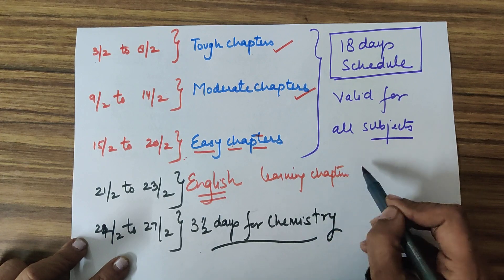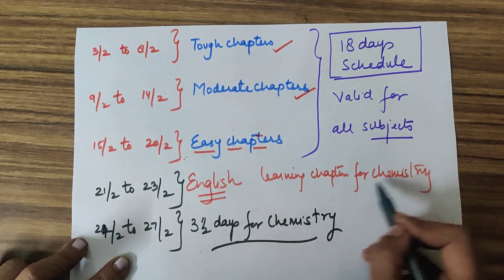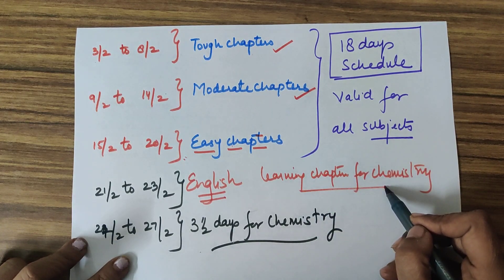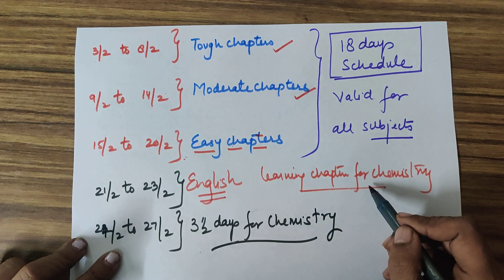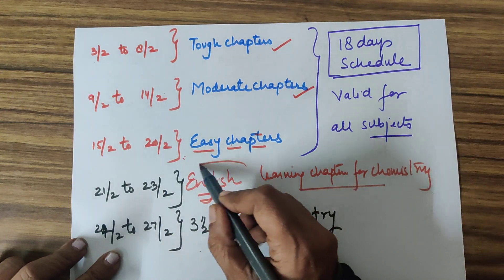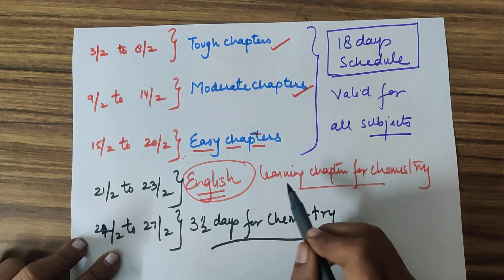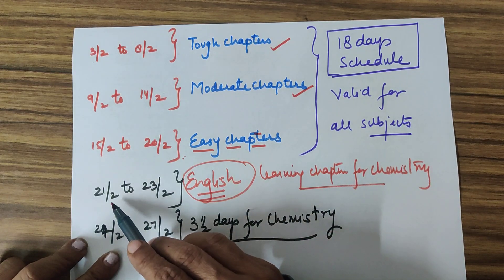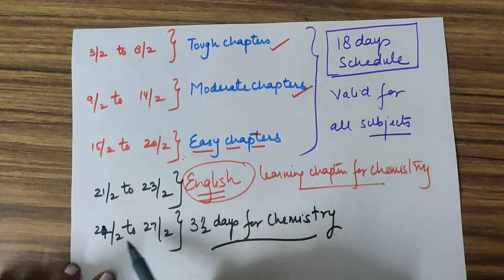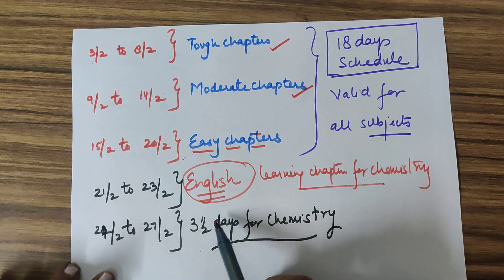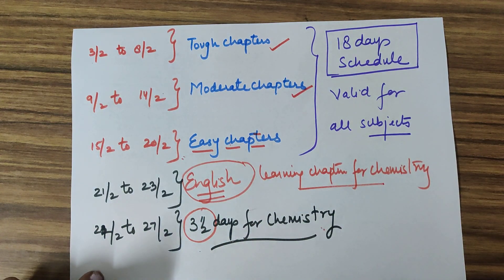Of chemistry, there are some chapters which you need to learn more, like biomolecules which you need to learn, organic sections which you need to learn. If you have to learn English comfortably, you can spend one and a half to two hours per day for these three days for learning chapters of chemistry also. 24th to 27th, then you have 3 and a half days solely for chemistry. How to divide this we will discuss in detail on the 24th.